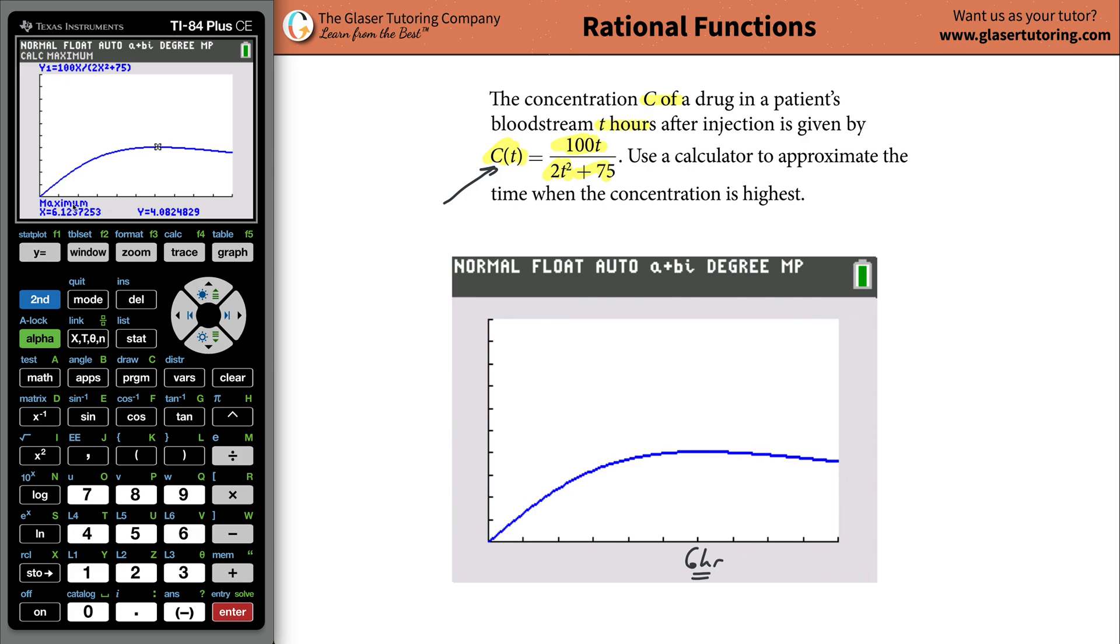Now the calculator here is telling you that the maximum is occurring when x is equal to 6.12. Well, x was the time. What did we say visually? We said about six hours, right? Now you know exactly what it is. 6.1237253 hours. It's a little over six hours. It reaches its maximum. And then you can also answer what's the maximum concentration. It looks like the maximum concentration is going to be here about 4.08. 4.08, whatever the units are. I don't know what they are. They just told us that this is an hour's time. I don't know what the concentration is. Could be milligrams per deciliter. Who the heck knows? But that's the number, at least.